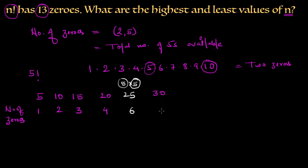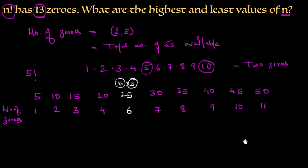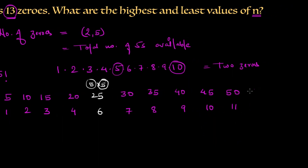Continuing to the next multiples: at 30 factorial we have 7 zeros, at 35 factorial we have 8 zeros, and moving on through 40 and 45 to 50, we accumulate up to 11 zeros by 50 factorial — or so we think initially.